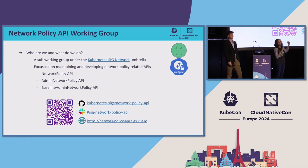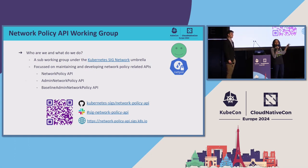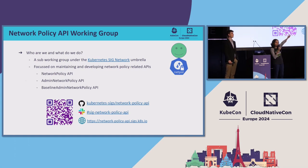These are basically the network policy API, which is stable at V1 and has been around for a really long time — five, six years. It lives in the core kubernetes/kubernetes repo. And recently we've been working a lot on the next two APIs: the admin network policy API and the baseline admin network policy APIs. If you're interested in our code base or website, please check out these links when you have the PDF.